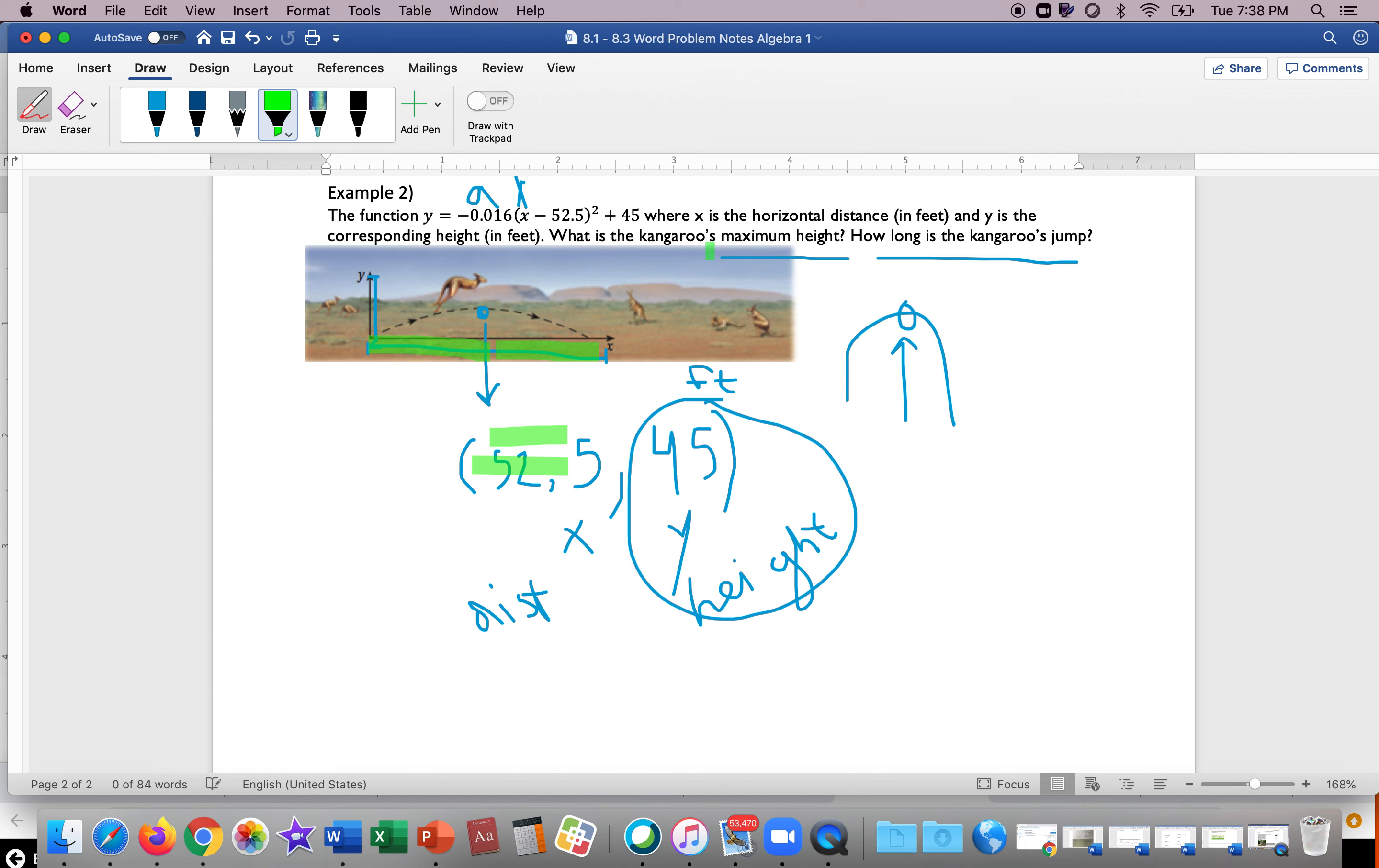So the answer is not 52.5 feet. We actually have to double it, right? So how long is the kangaroo's full jump from when it starts, and if it keeps going until it lands, you have to actually take that x-value and you have to double it, right? Because this x-value again is just to the halfway point.